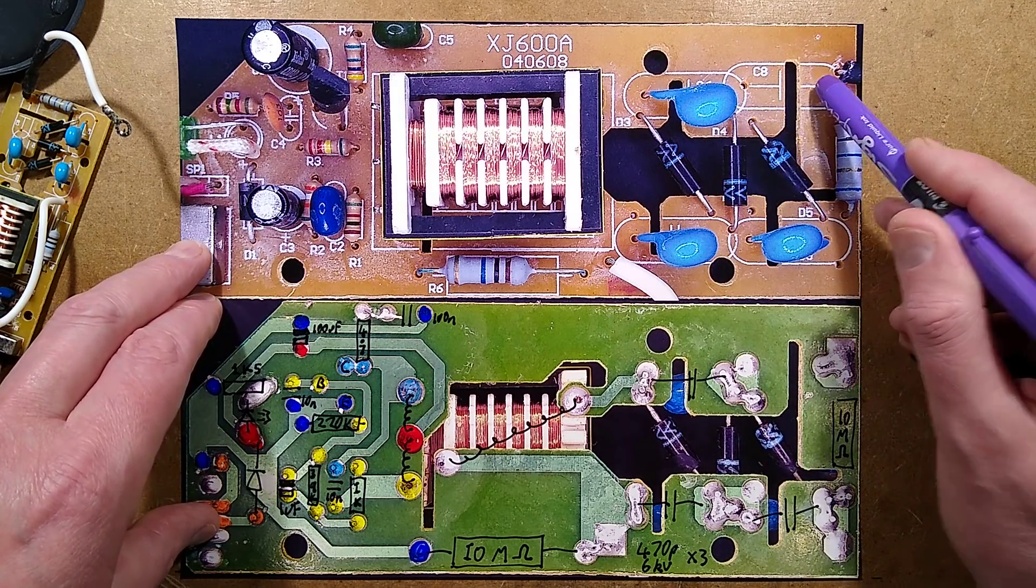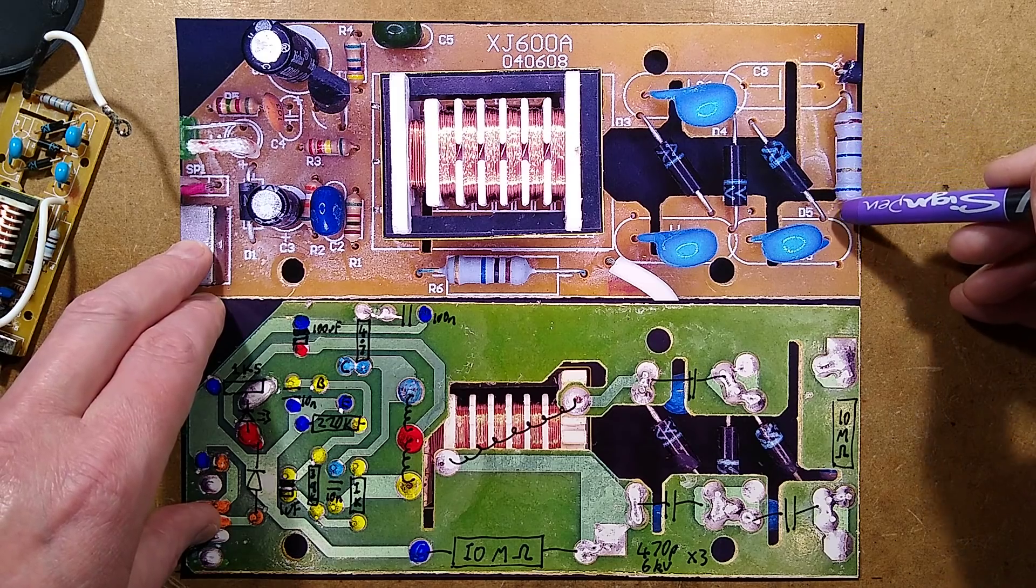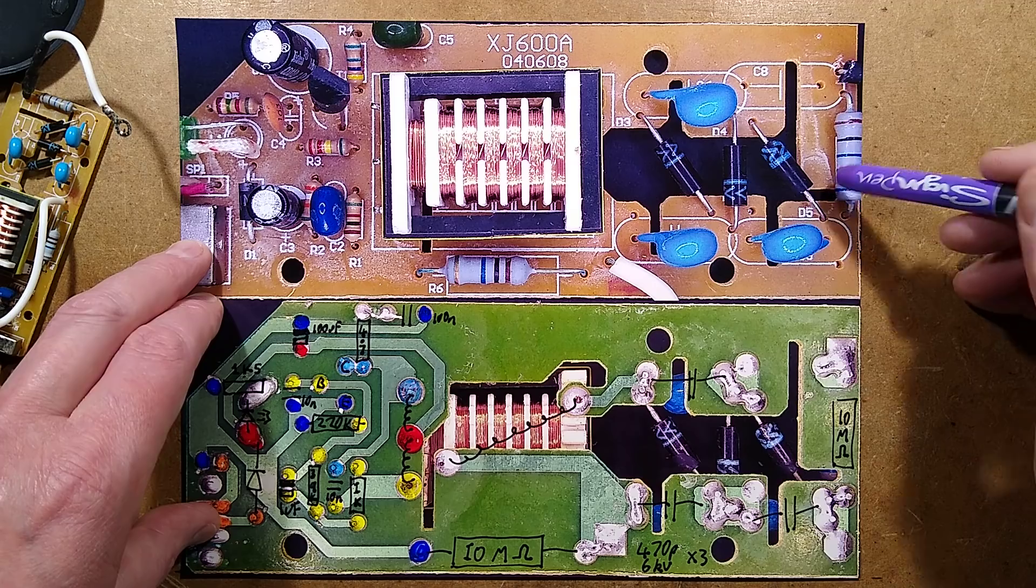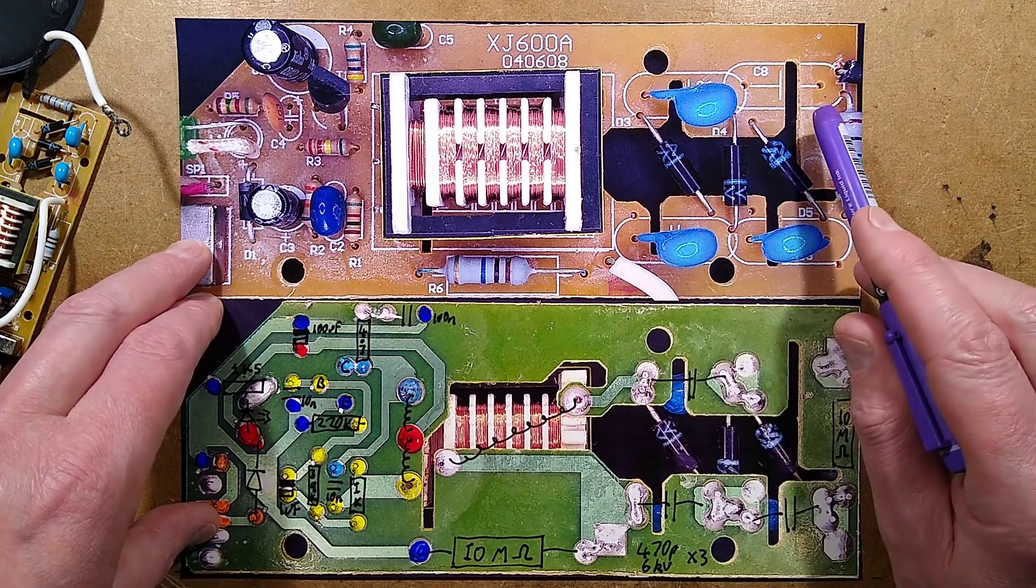And then they've used a three stage multiplier. Effectively, they could have added another capacitor in the position of this resistor here, this 10 mega ohm resistor, could have been another high voltage diode. They've just kept their options open to actually boost that higher.